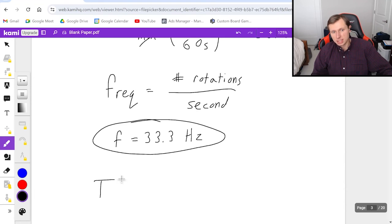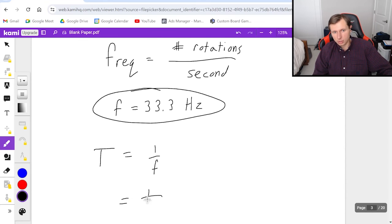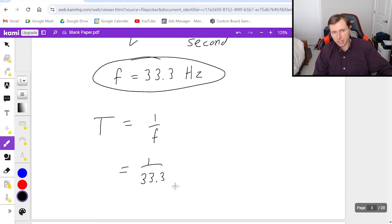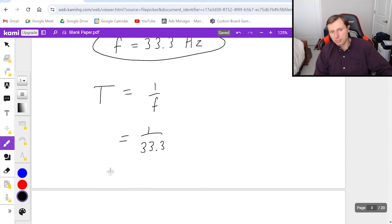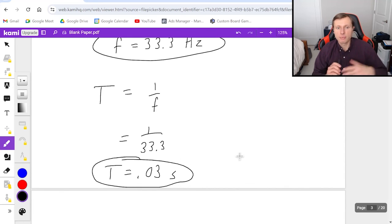Now, if we want to find period, T is equal to one over F. So it's just one over 33.3. You could also take the reciprocal in your calculator. And I'll get a period of 0.03 units, or seconds. And what this means is, every 0.03 seconds, the engine completed one revolution. Again, very fast.